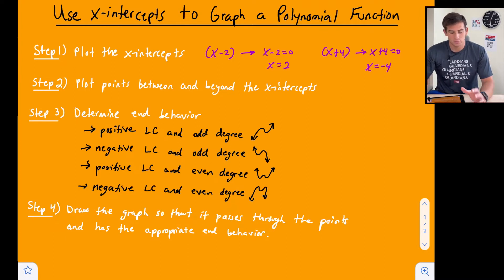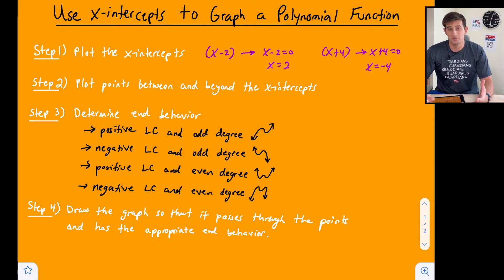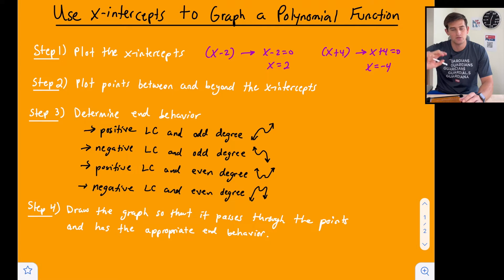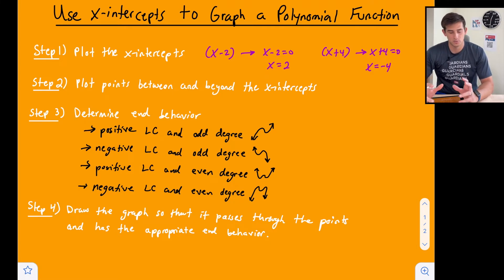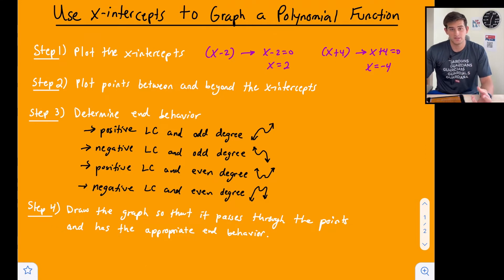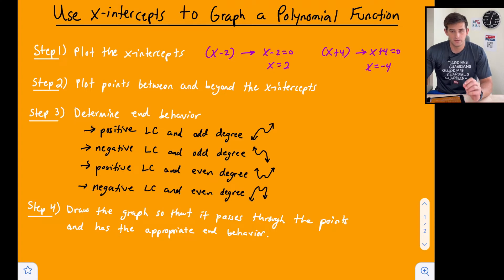Step two: we want to plot some points between and beyond our x-intercepts. Specifically between, because we want to know where our curve is — for example, what the middle of a w-shaped graph looks like. That's important, because for beyond the x-intercepts we can just think about our end behavior to determine what the graph looks like out there.